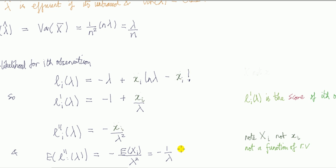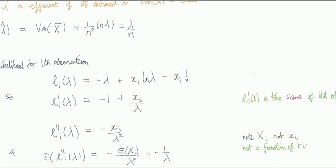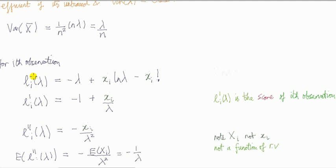Another bit of jargon—this first derivative of the log likelihood of a single observation is called the score. Again, some people might call the score the score for all observations.